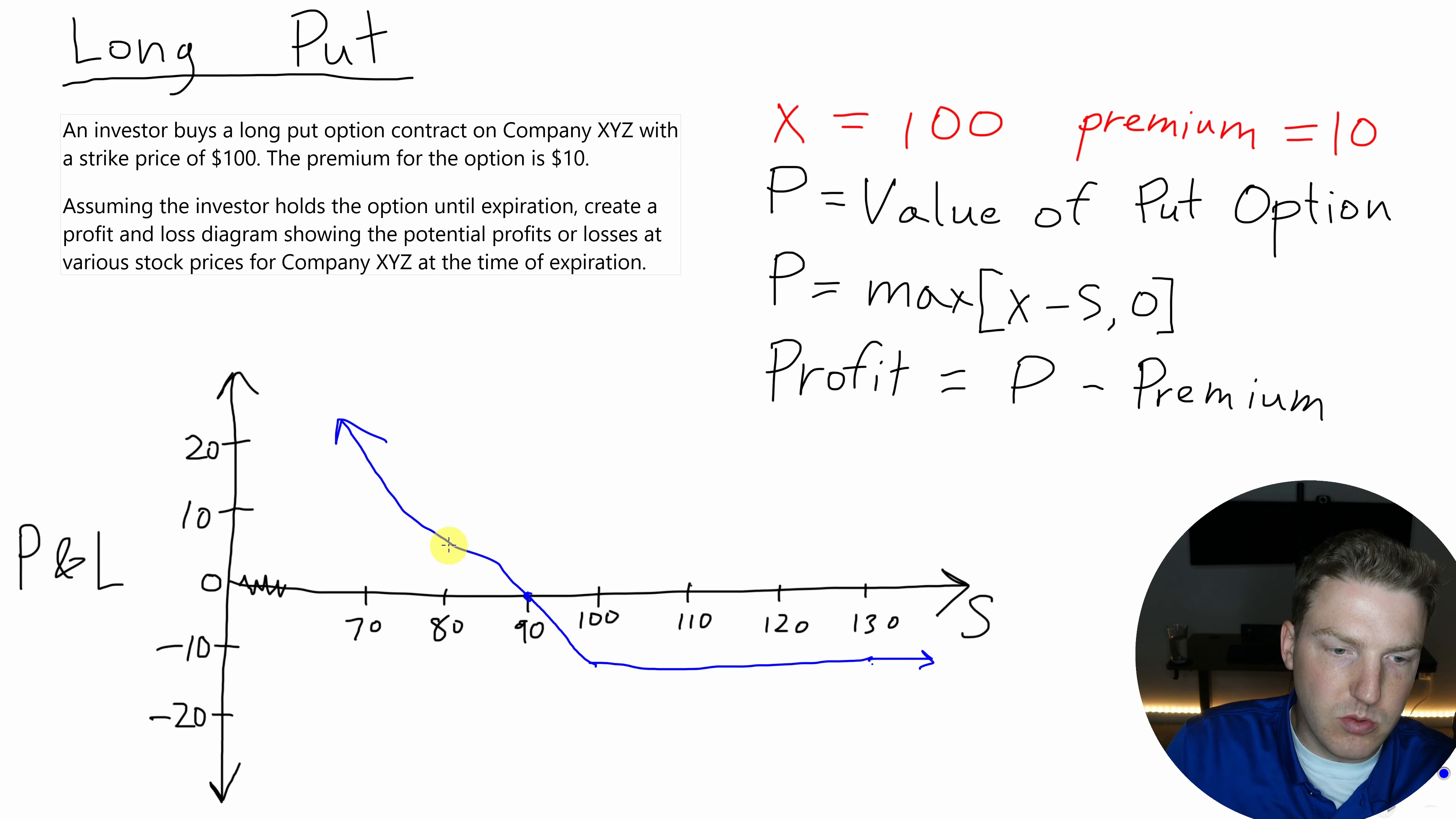But then let's say once we get to $80, we should be up $10. And that is because we're selling something for $100 that's really only worth $80. So this put option is worth $20 and our profit is equal to $20 minus the initial $10 that we had paid for premium, which gives us a $10 profit.